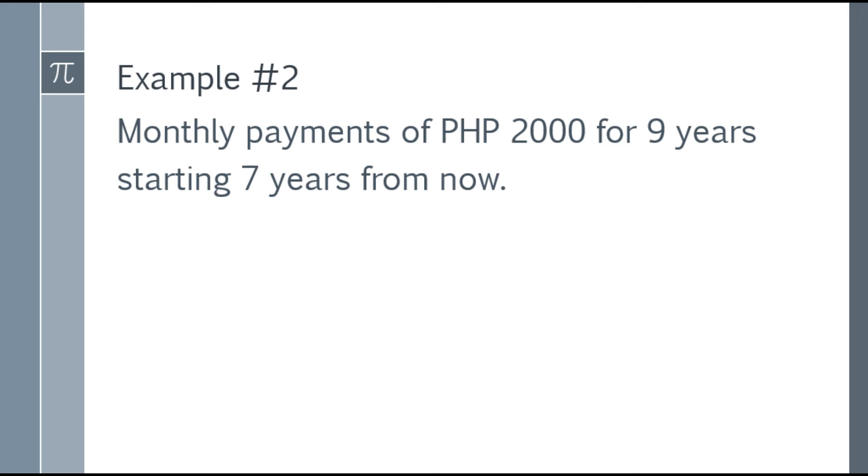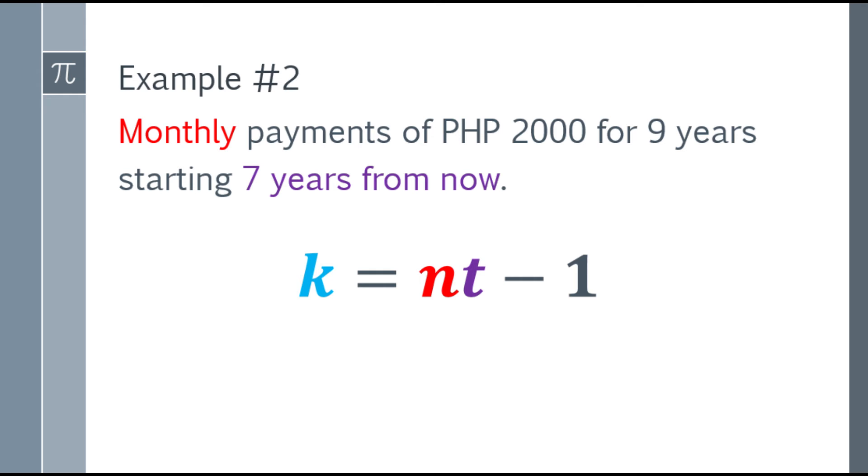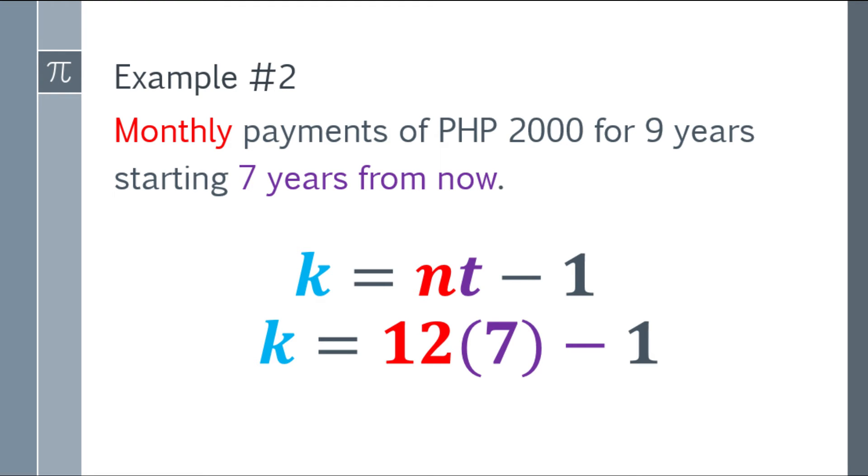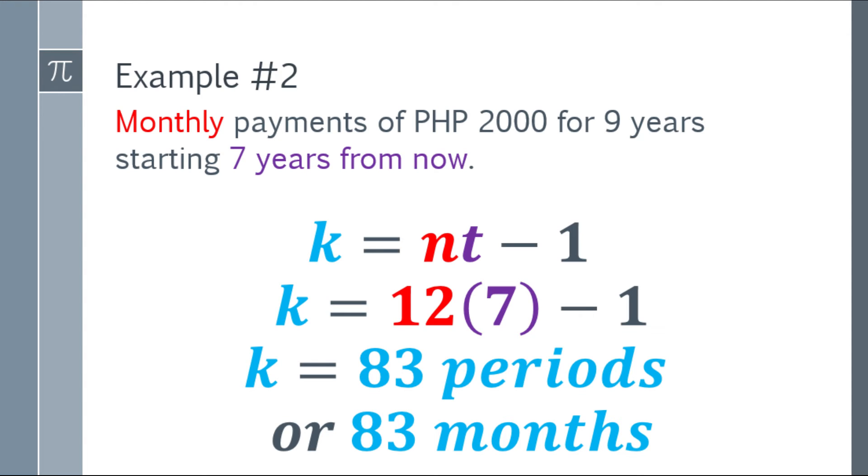Second example. Monthly payments of 2,000 pesos for 9 years starting 7 years from now. Let's use the formula, k equals nt minus 1. What is n? That will be monthly, so 12. And t, what will we use? 9 years or 7 years? Always check where it says starting 7 years from now. Where the payment starts is our t. At 7 years, so it's 7 as is. We don't need to convert because it's already in years. Next, let's substitute. K equals 12 times 7. The answer, minus 1, will be 83 periods or 83 months. So the period of deferral is 83 months or 83 periods.